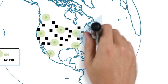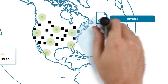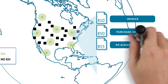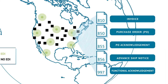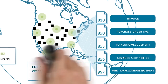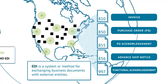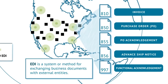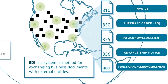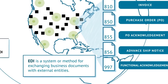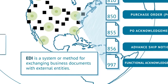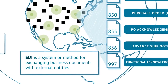EDI has hundreds of document types, covering most transactions that are commonly used among vendors and suppliers. More than just a data format, EDI is a system or method for exchanging business documents with external entities and integrating the data from those documents into your internal systems.